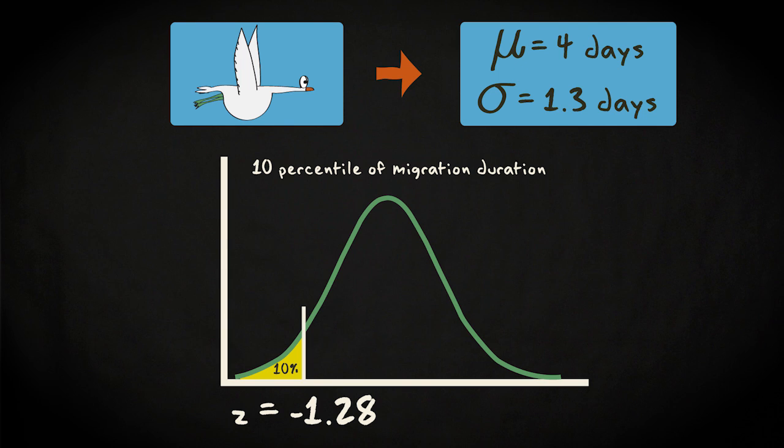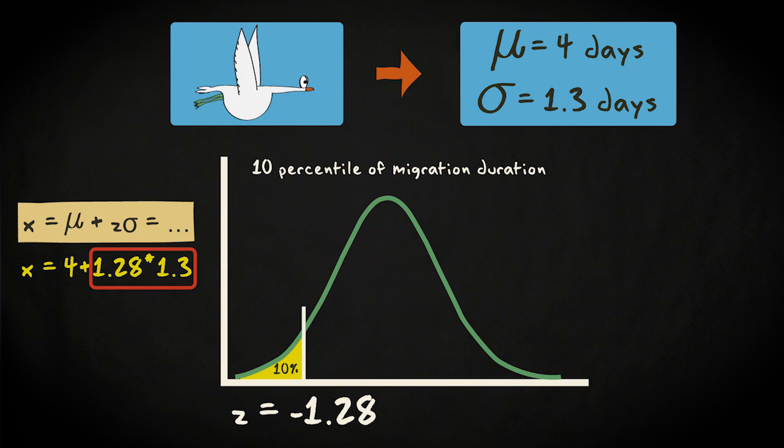Subsequently, it's a matter of applying this formula. You multiply the Z-value with the standard deviation of 1.3, and then you add the mean of 4 days. You end up with the value of 2.34 days, as an answer to the question.